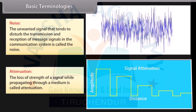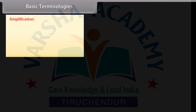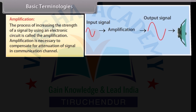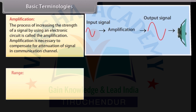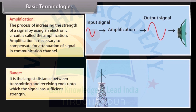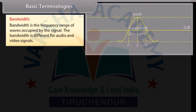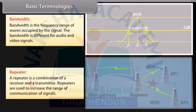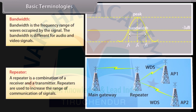Attenuation is the loss of strength of a signal while propagating through a medium. Amplification is the process of increasing the strength of a signal using an electronic circuit; it is necessary to compensate for attenuation in the communication channel. Range is the largest distance between transmitting and receiving ends up to which the signal has sufficient strength. Bandwidth is the frequency range of waves occupied by the signal; it is different for audio and video signals. A repeater is a combination of a receiver and a transmitter, used to increase the range of communication.